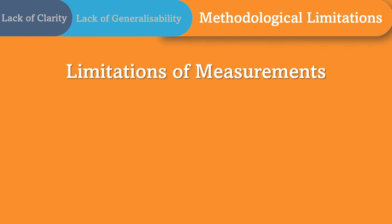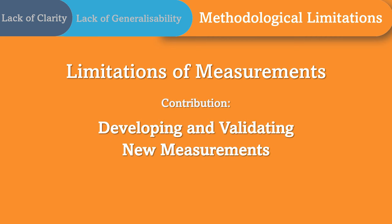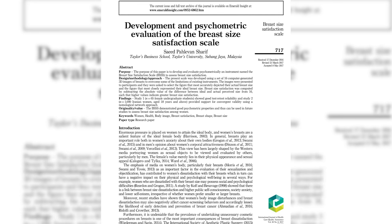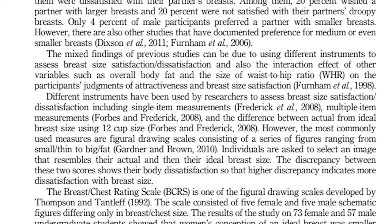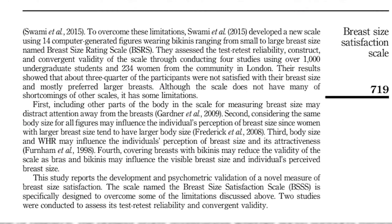Another example is the limitations of current measures, which can be addressed by developing and validating new measurements. For example, in one of my papers, I developed and validated a new scale to measure breast size satisfaction. After reviewing the results of past studies and highlighting their mixed results, I stated that the mixed findings of previous studies can be due to using different instruments to assess breast size satisfaction. I then critically reviewed the current instruments and their limitations to highlight the need for a new instrument, and stated the objectives of the study: the development of a new instrument to measure breast size satisfaction.